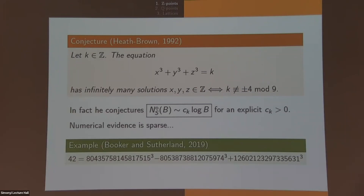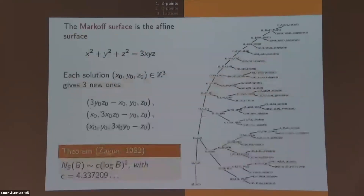Sums of three cubes: the conjecture is that if you have the Diophantine equation x^3+y^3+z^3=k, then provided it passes the necessary local tests — namely that k should not be ±4 mod 9 — it should have infinitely many solutions. In fact, Heath-Brown came up with a heuristic suggesting the number of solutions should grow like C·log B. It's quite hard to get numerical evidence for that; we only know one example when k=42, so it's very hard to test this conjecture numerically.